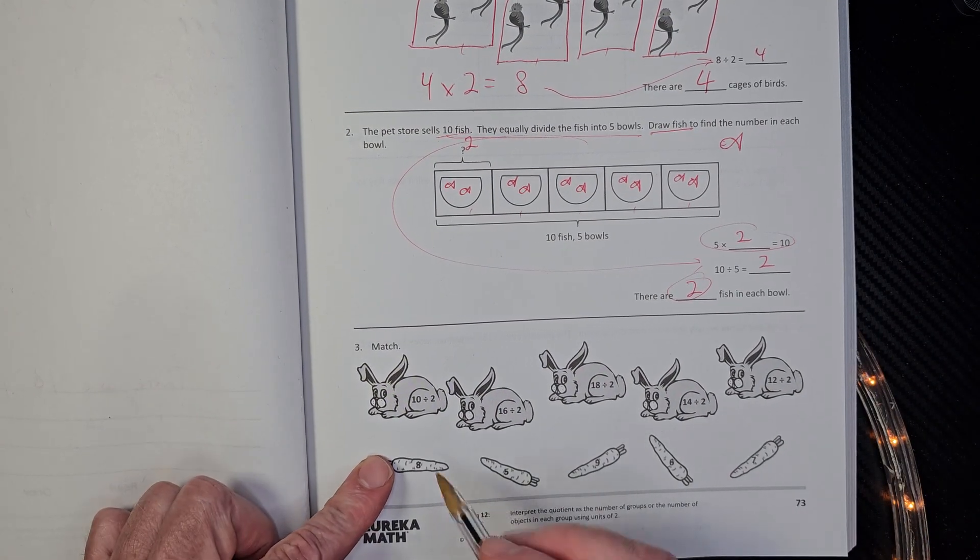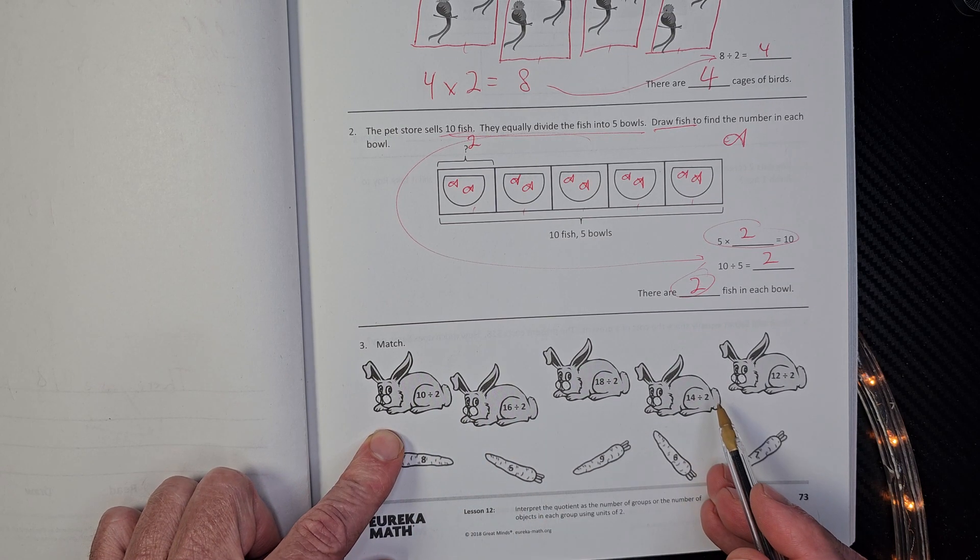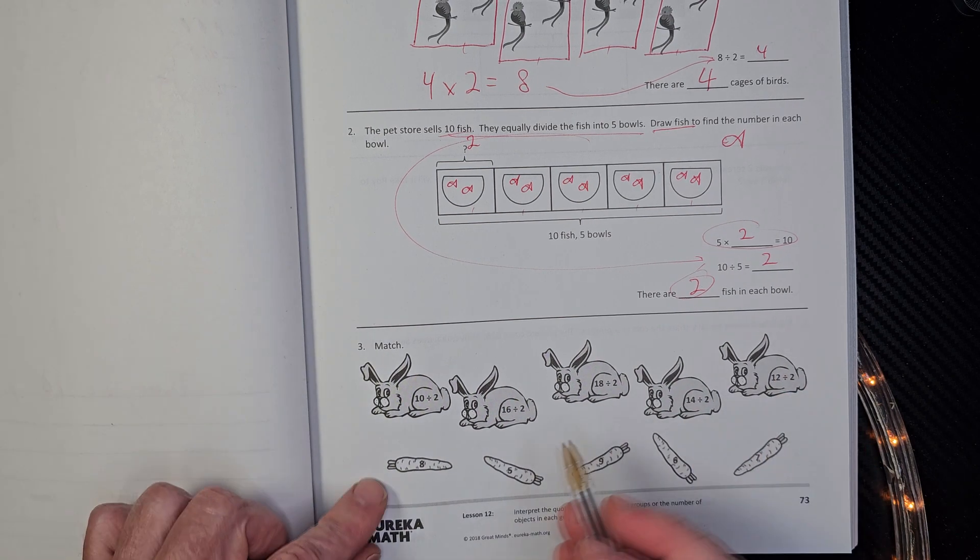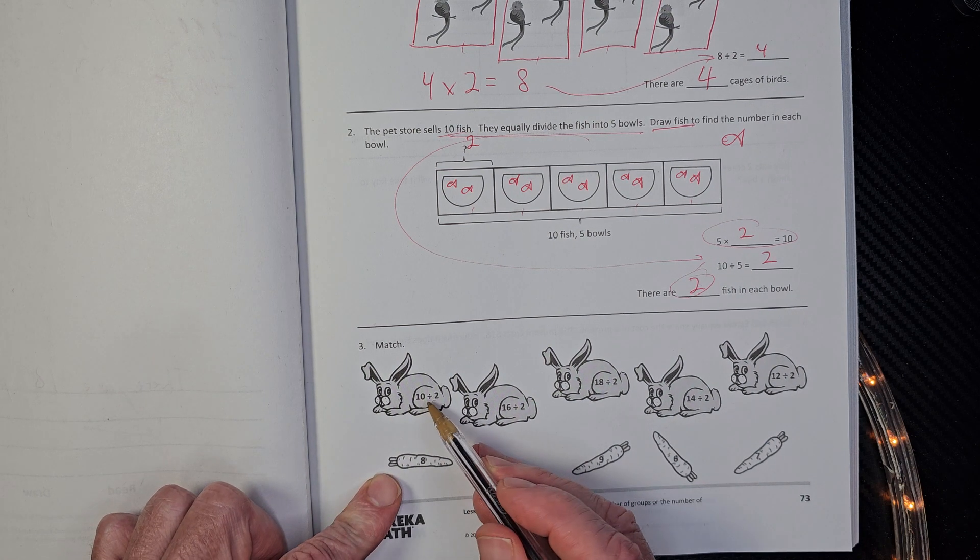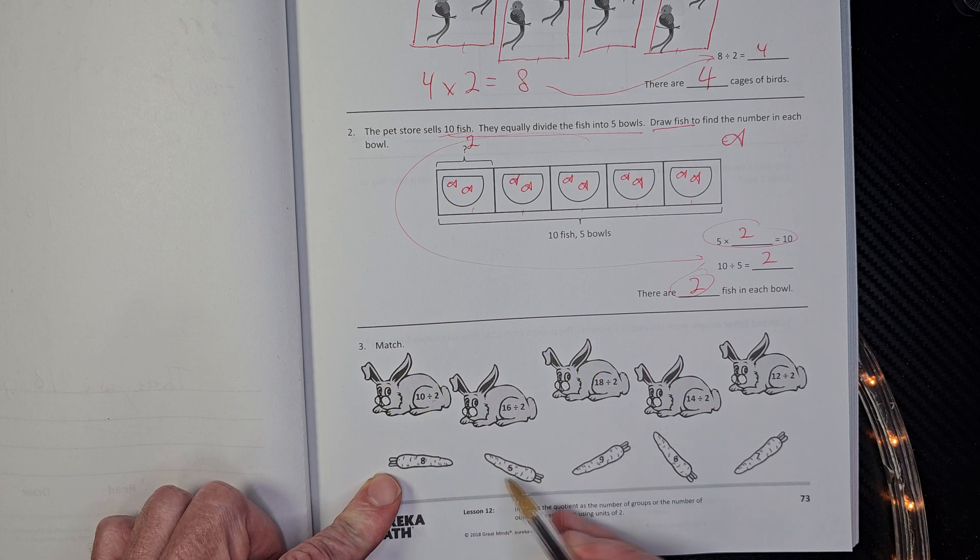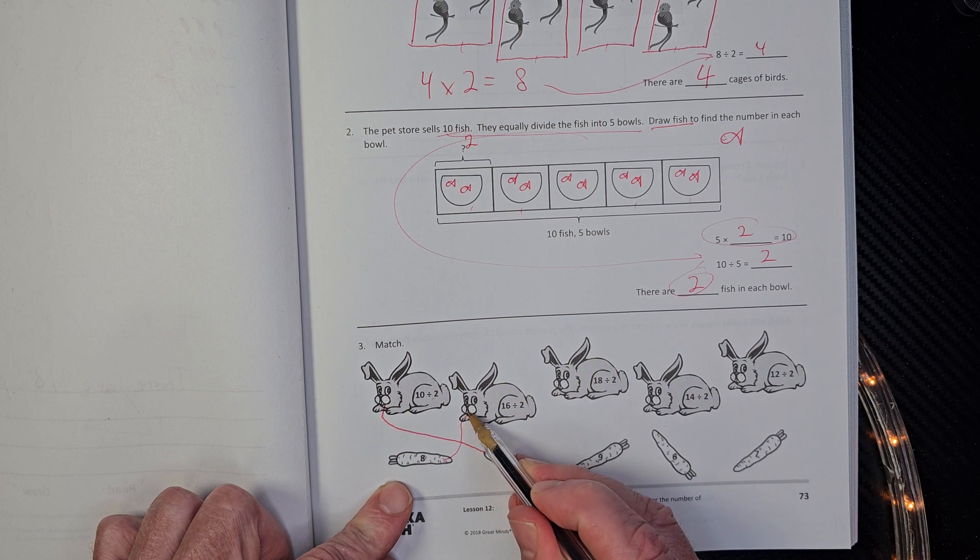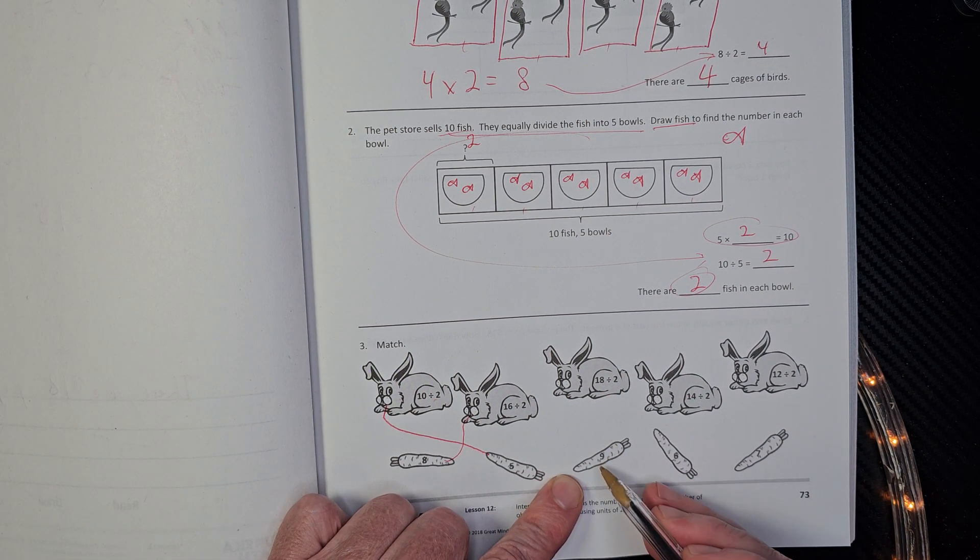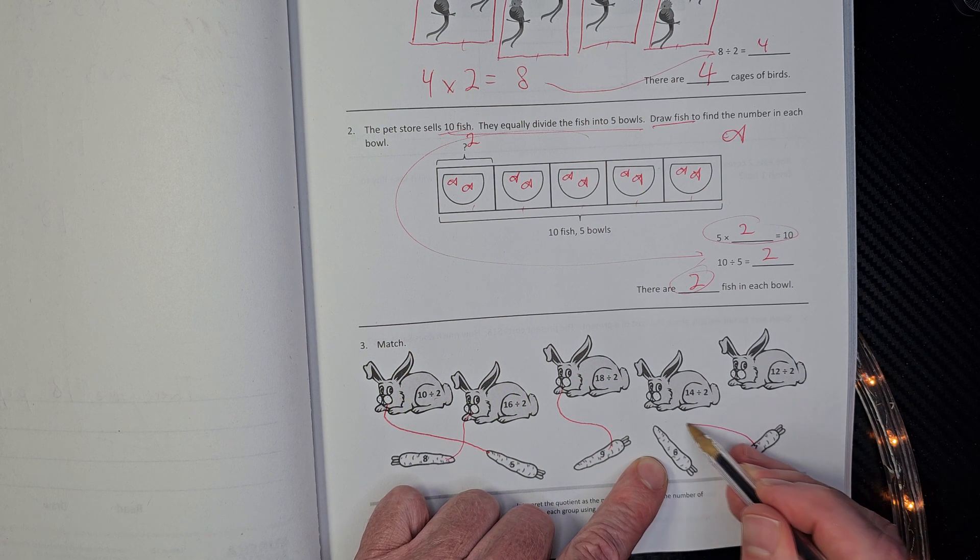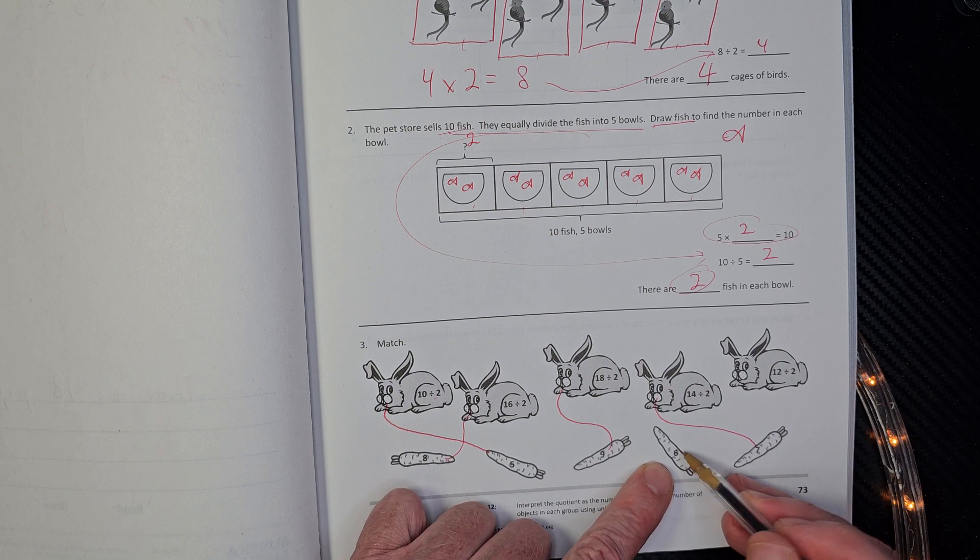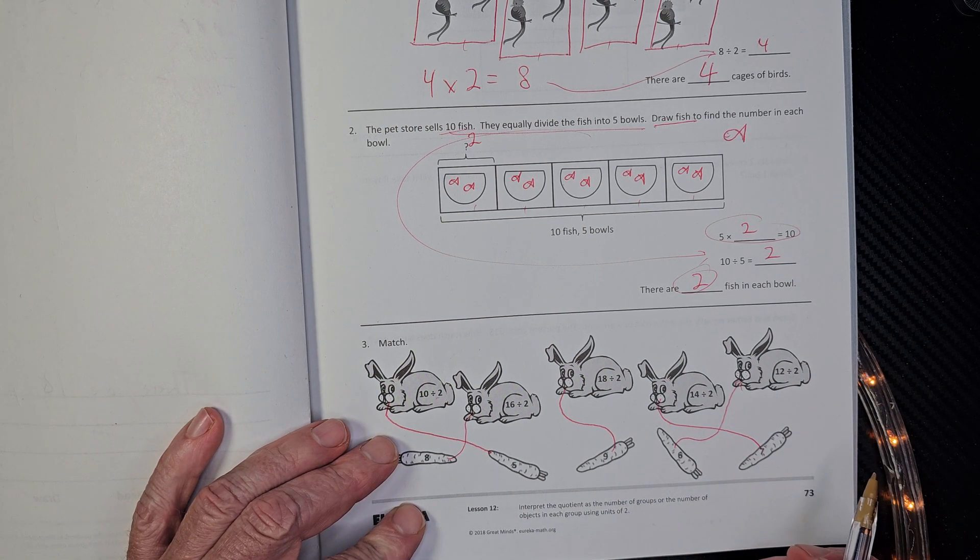We got some bunny rabbits here. We got to match the bunny rabbit to the carrot so that they can eat it. So if you didn't go ahead and do this, why don't you do that? Hit the pause button. And when you're ready to check it with me, hit play. Remember, division is the opposite of multiplication. Ten divided by two - just cut ten in half - what is it? Five. Here's a carrot. What's half of sixteen? Eight. And half of eighteen? Nine. What's half of fourteen? Seven. And then we have half of twelve would be six. Now our little rabbit friends are happy.